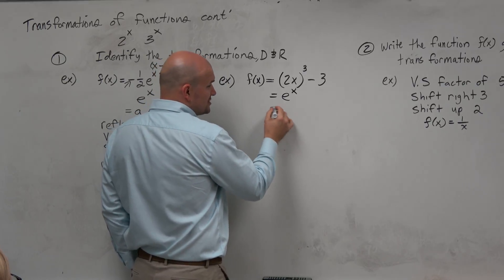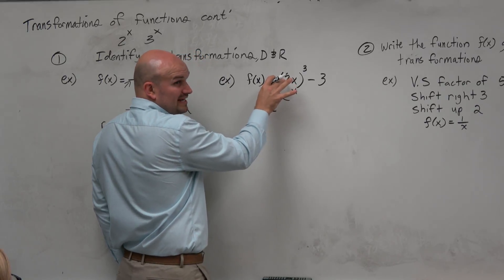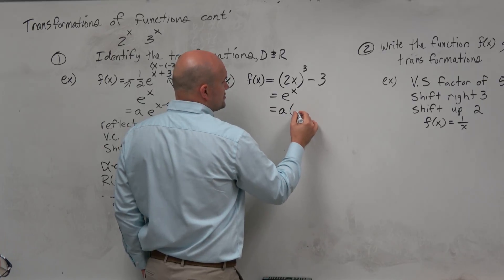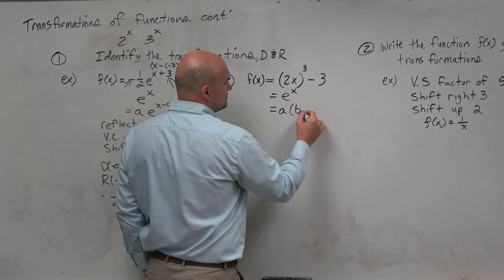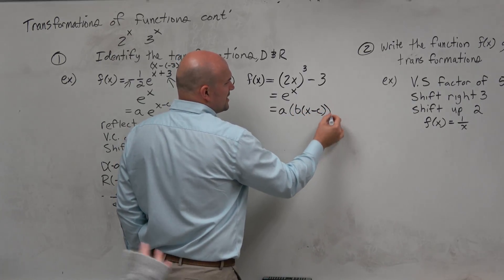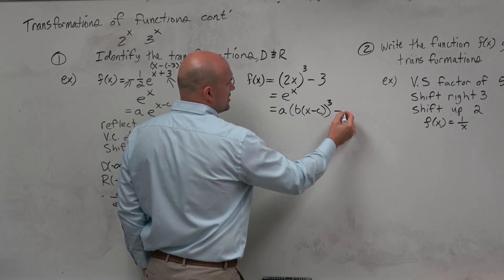If you want to apply transformations, now notice we have a b here, right? So I'm going to write this with the b. So this would be b times x minus c. I kind of wrote that wrong originally on your guys' notes, so I apologize for that.